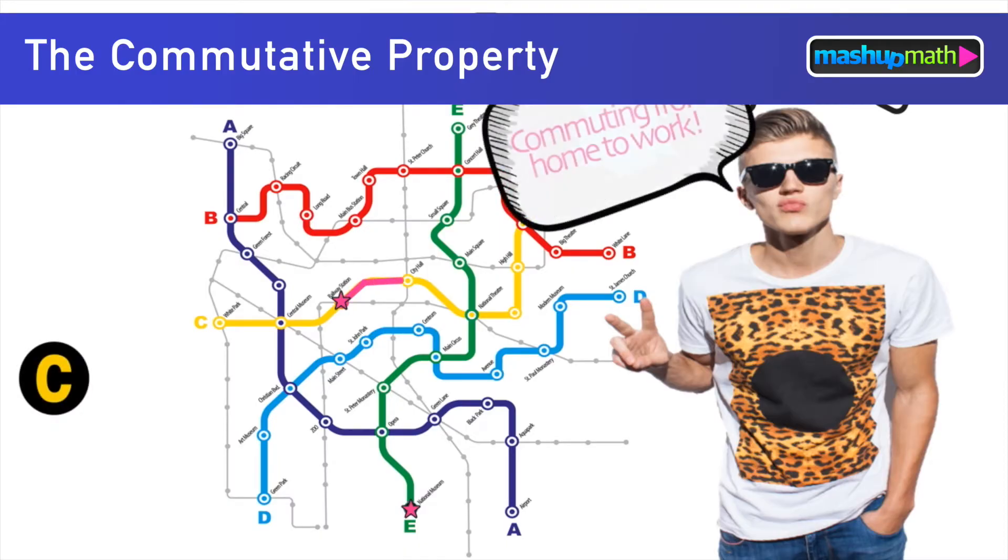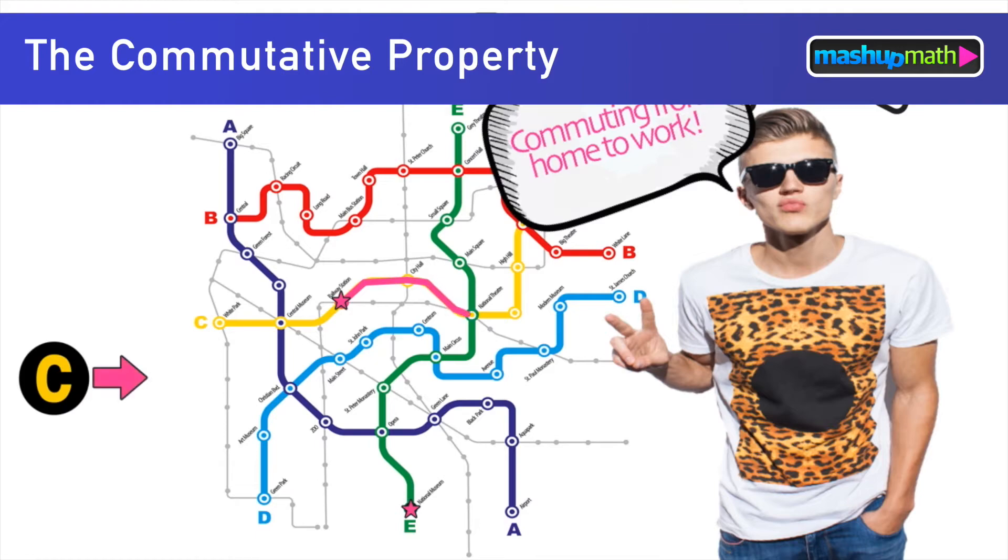He begins his commute to work on the C subway line which he takes until the stop at the National Theatre where he transfers onto the E line which takes him all the way to the National Museum subway stop.